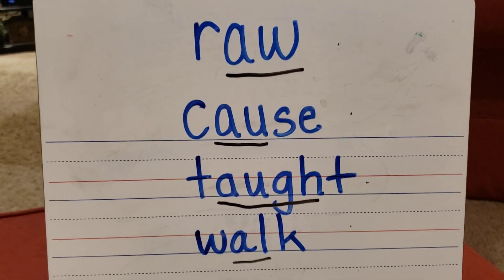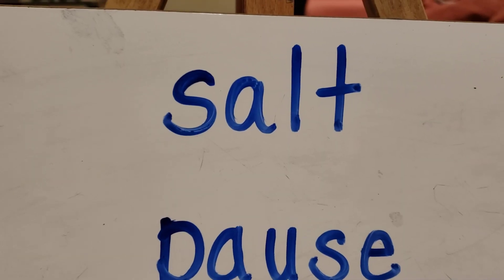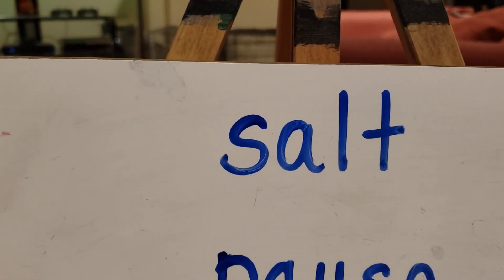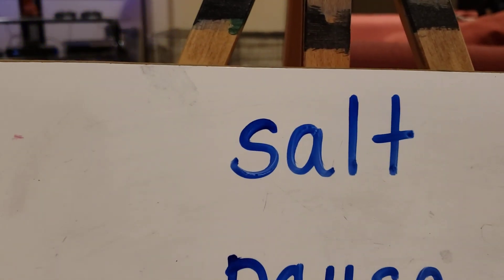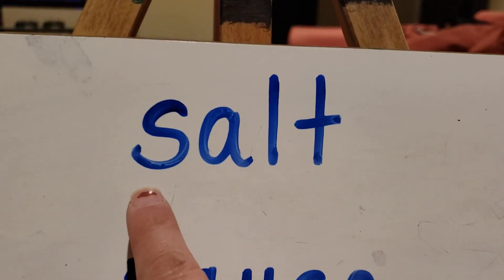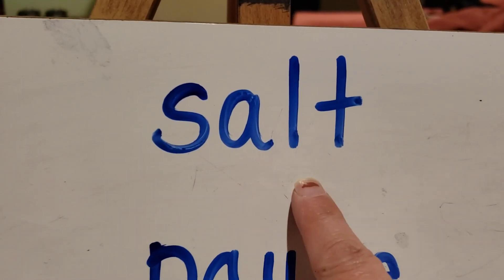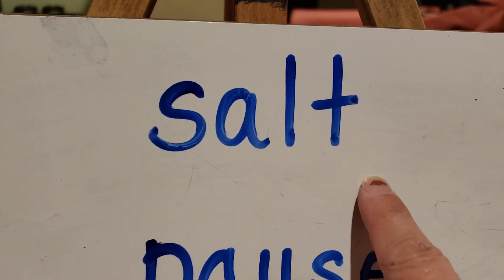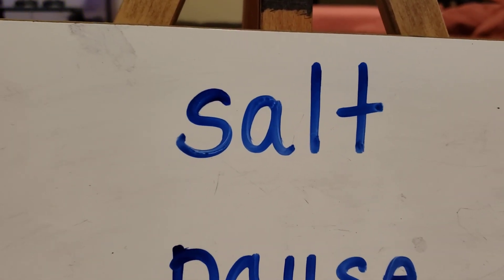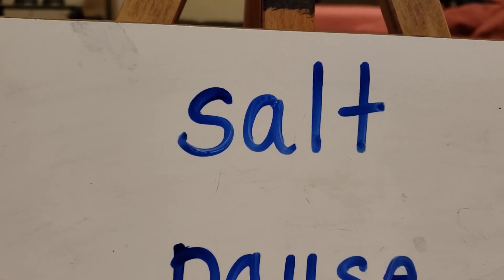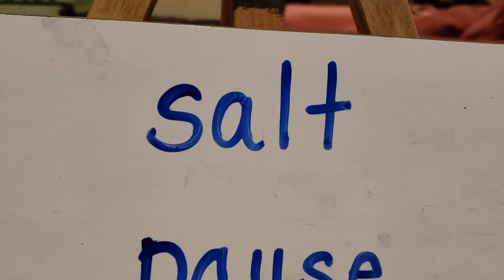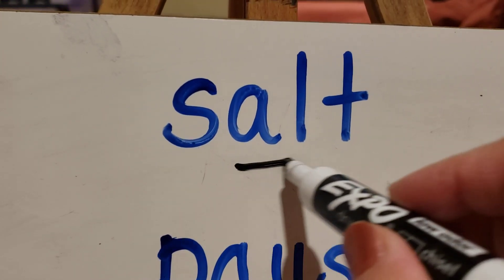Now we'll try some new words. Make sure you're reading the word with me. We're going to blend the word, then say it — the slow way, then the fast way. S-A-L-T, SALT. In the word SALT, what letters make the AW sound? Yep, the A-L.